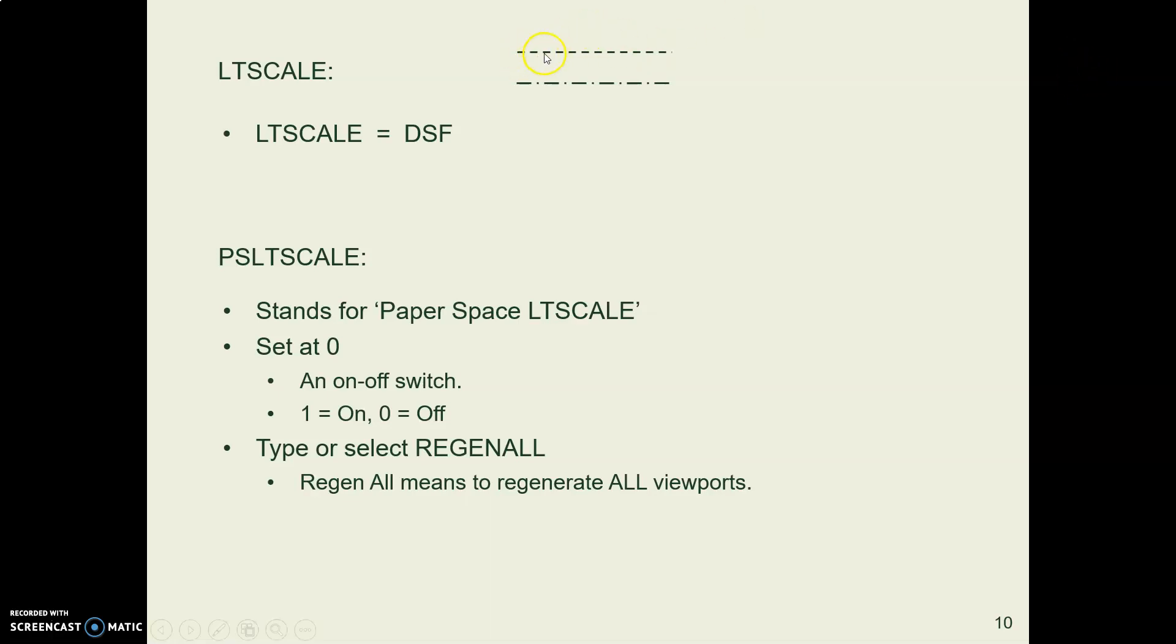If you go into model space with a building that's 200 feet long, and you draw a hidden line where the dashes are an eighth of an inch long in model space, now you come out to paper space and you scale that thing well down, way down, you're going to have little teeny tiny dashes so small you can't see them. So what do you do?